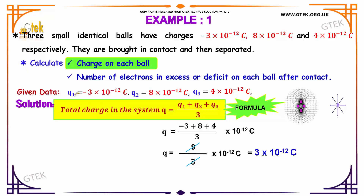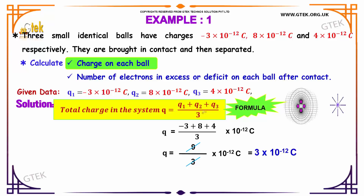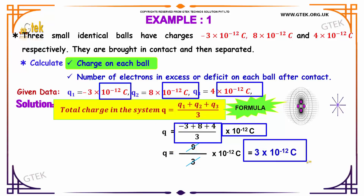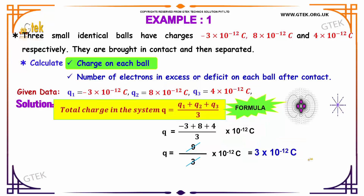We have Q1, Q2, and Q3 as given. The total charge per ball after contact is Q = (Q1 + Q2 + Q3) / 3, since there are 3 balls. Taking out 10 power minus 12, we get minus 3 plus 8 plus 4 = 9, divided by 3. So the charge on each ball is 3 into 10 power minus 12 Coulomb.